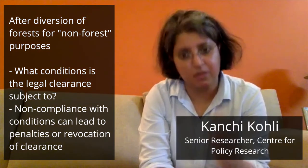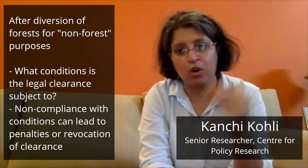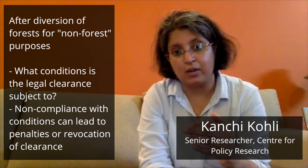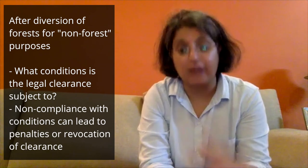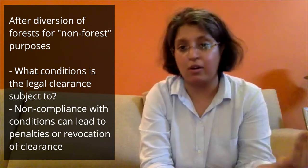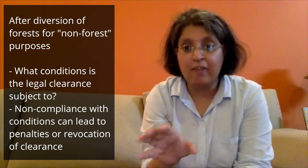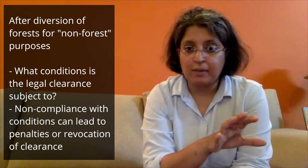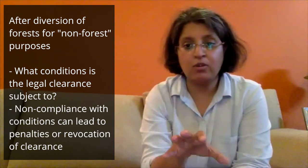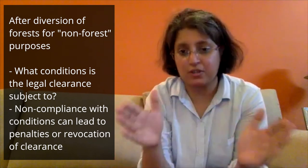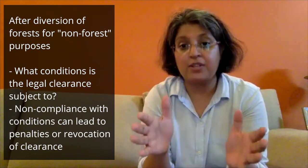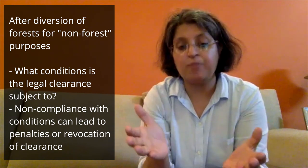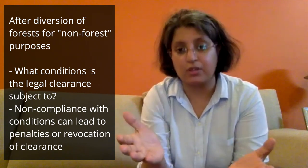Where the state government has given section 2 permission under the Forest Conservation Act, two documents will be extremely crucial. One is the stage 2 forest clearance by the Ministry of Environment and Forests, which comes with a host of conditions on what needs to be done prior to starting activity or during the operations of a mine, port, or hydroelectric power station. The state government can also retain the central government conditions and add more. It is important to have both documents to know the full set of conditions that the forest diversion is dependent upon. A violation of those conditions could lead to penalties or even revocation of the forest clearance.